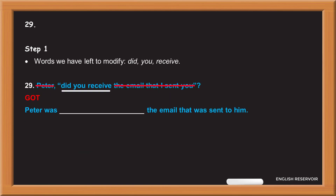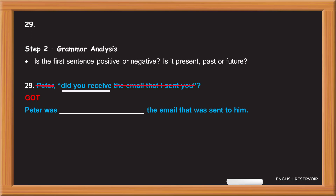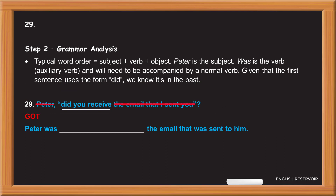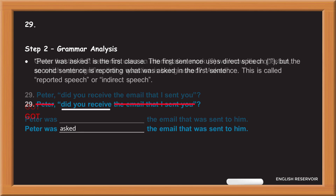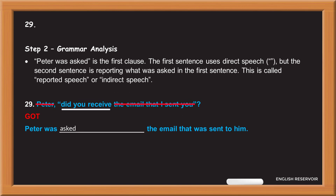The words we have left to modify are: did you receive. Step 2 grammar analysis: is the first sentence positive or negative? Is it present, past, or future? Typical word order equals subject plus verb plus object. Peter is the subject; 'was' is the auxiliary verb and will need to be accompanied by a normal verb. Given that the first sentence uses 'did', we know it's in the past. Given that the first sentence uses an interrogative mark, we know it's a question — so which verb signifies that a question is being asked? Asked.